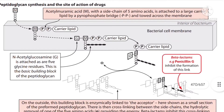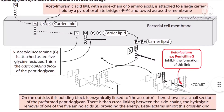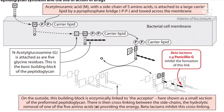Flucloxacillin is a peptidoglycan synthesis inhibitor in nature. The site of action of the drug is shown here with the black arrow. Acetylmuramic acid with a side chain of 5 amino acids is attached, as shown by the black arrow, to a large carrier lipid by a pyrophosphate (PP) bridge, and this crosses the membrane. The gray area represents the interior of the bacterium.